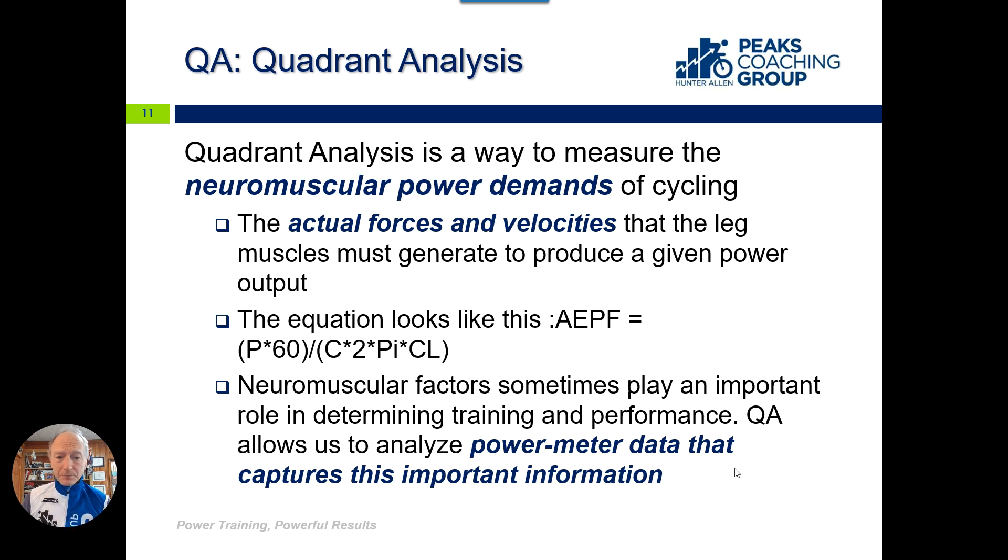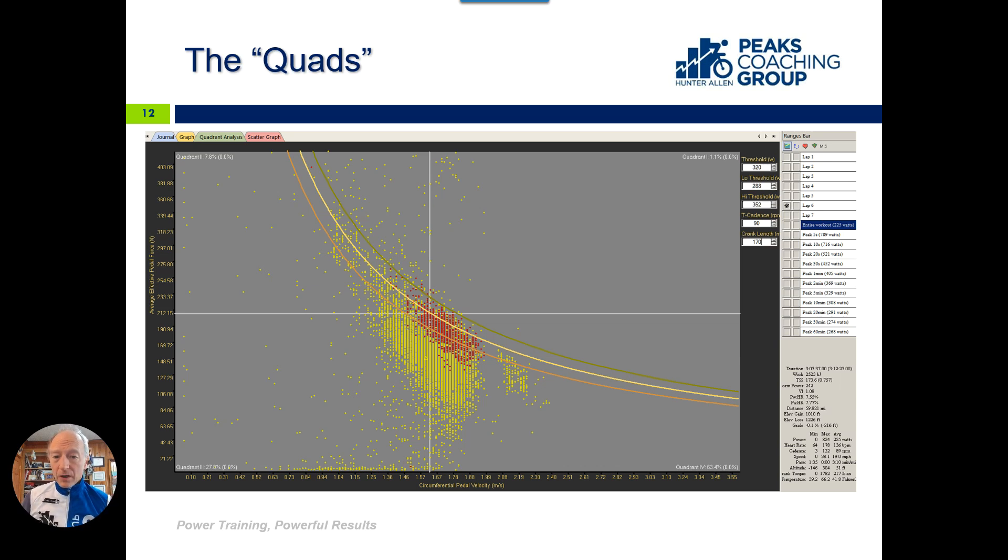What does this look like when we look at the different quadrants? We've got a yellow line that comes across here—this is your FTP. On the Y-axis is your average effective pedal force in Newtons. This is pedaling really hard at the top, not pedaling hard at the bottom. Over here on the X-axis, this is circumferential pedal velocity—your cadence. This is pedaling really fast, this is pedaling really slow. This line here in the middle, this is 90 RPM.